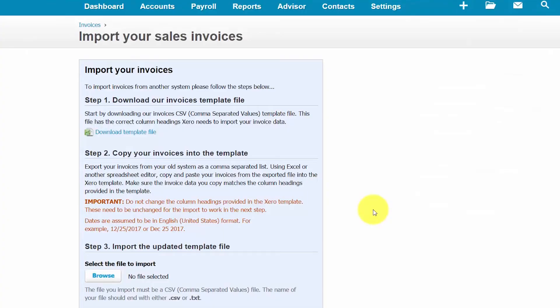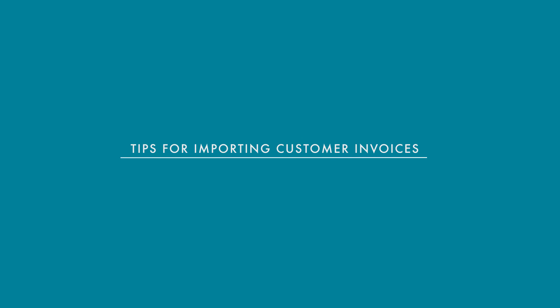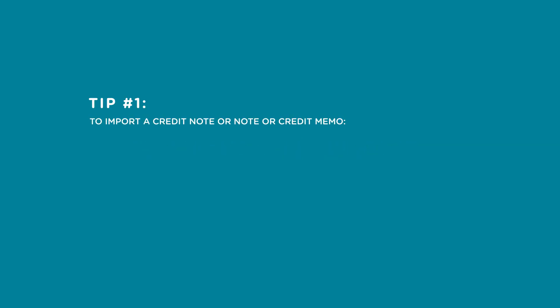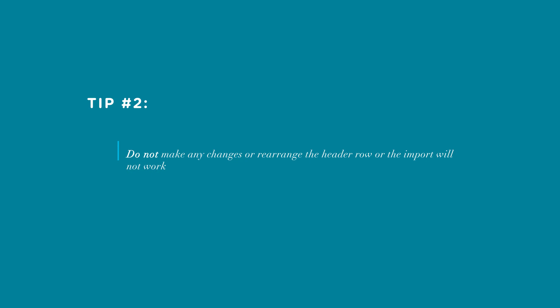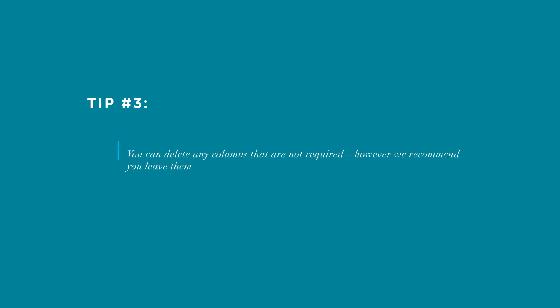Before we proceed with the import, here are some tips to ensure a successful import. Tip one: to import a credit note or credit memo, enter them in the invoice template with a negative unit price. Tip two: do not make any changes or rearrange the header row or the import will not work. Tip three: you can delete any columns that are not required, but I recommend leaving them since there is no harm in doing so.